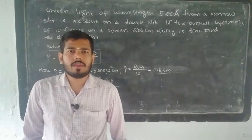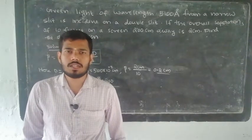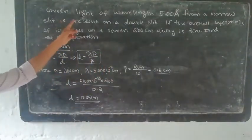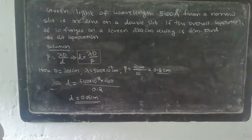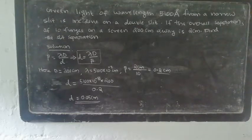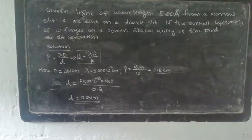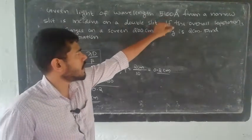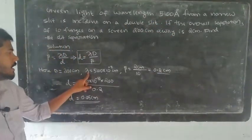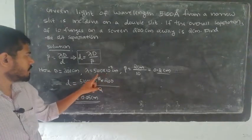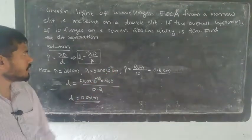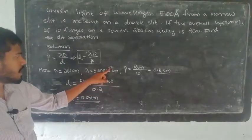Interference by Division of Wavefront. In this chapter we have a few problems. The problem is that green light of wavelength 500 Angstroms from a narrow slit is incident on a double slit. If the overall separation of 10 fringes on a screen 200 cm away is 2 cm, find the slit separation.